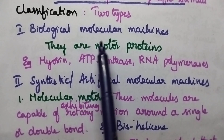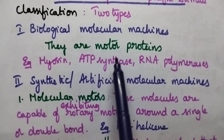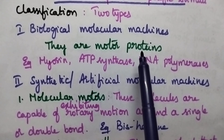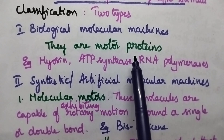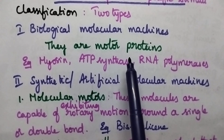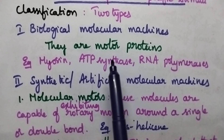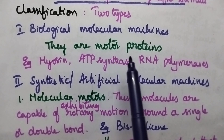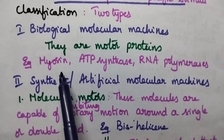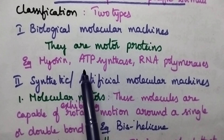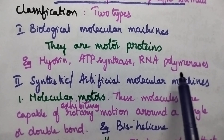Biological molecular machines are nothing but proteins present in the biological system. They are responsible to carry cargo transport from one cell to the other cell. They generally include myosin, ATP synthesis, and RNA polymerases.